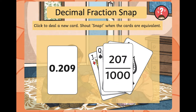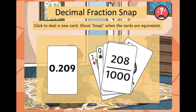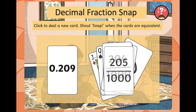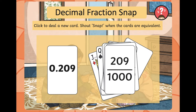Is it 207 over a thousand, 208 over a thousand, 204 over a thousand, 205 over a thousand, 201 over a thousand, 209 over a thousand? Well done if you said snap, because 0.209 is equivalent to 209 over a thousand, or 209 thousandths.